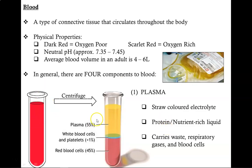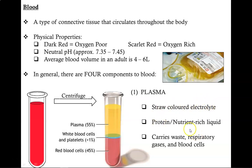When you do this with blood, we get three distinct layers. The first is blood plasma, which is a straw-colored electrolyte. If you recall, electrolytes are aqueous solutions that conduct electricity. Blood plasma is protein and nutrient rich, and carries waste, respiratory gases, and blood cells.